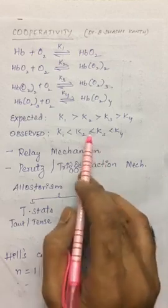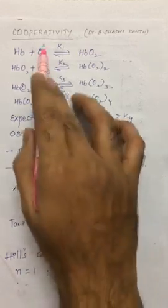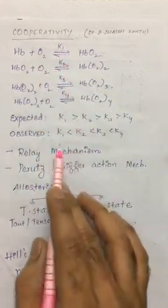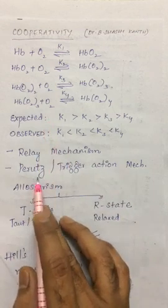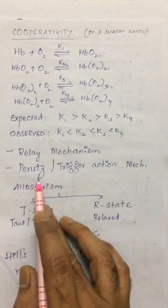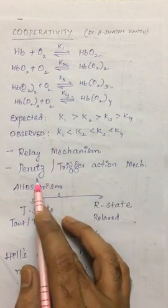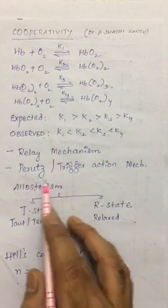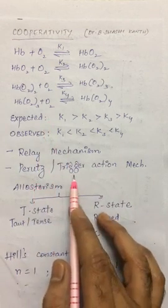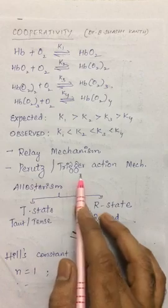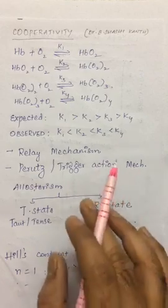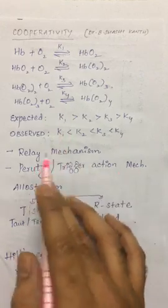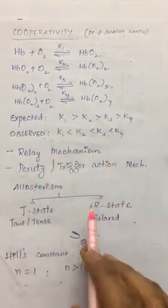The mechanism is called cooperativity. This was introduced by Perutz, therefore that mechanism is also called the Perutz mechanism or the trigger action mechanism. Simply speaking, cooperativity is like a relay mechanism.